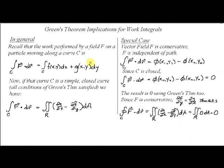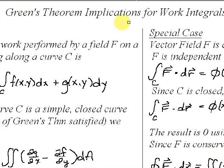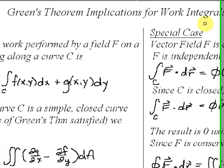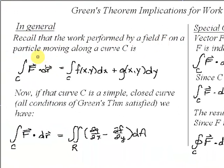In this segment, we're going to discuss the implications of Green's theorem for work integrals. In general, recall that the work performed by a field F on a particle moving along a curve C is given by the integral over C of F dot dr, or that's equal to the integral over C of f(x,y) dx plus g(x,y) dy.